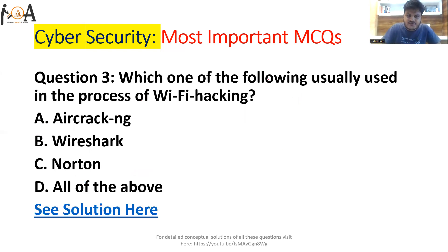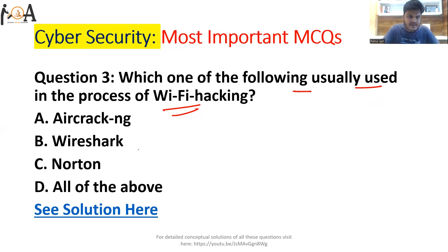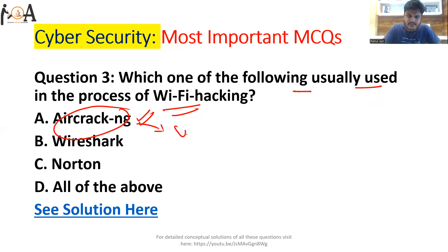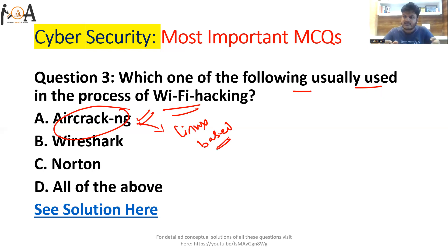Question number three: which of the following is usually used in the process of Wi-Fi hacking? The options are Aircrack-ng, Wireshark, Norton, or all of the above. The correct answer is Option A — Aircrack-ng. It is a Linux-based software tool used to hack Wi-Fi networks, find vulnerabilities in Wi-Fi networks and servers, and attempt to compromise the system.